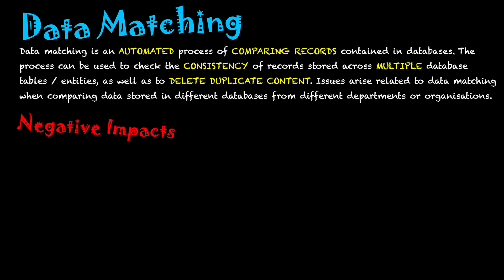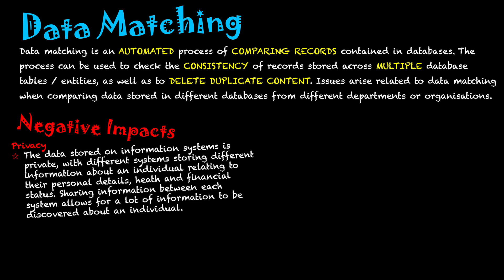Let's focus on the negative impacts first. Firstly, there is privacy. Data stored on an information system is private, with different systems storing different information about individuals relating to their personal details, health, or financial status. Sharing information between these systems allows a lot of information to be discovered. For example, if my financial records are in one database but not another, that second database may gain access to my financial data when the two are cross-checked.